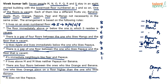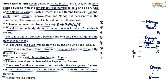We now have 7 consecutive floors arranged. The 8th floor can be either above mango or below S. If it's above mango, then S would fall on the 1st floor — but S lives on an even-numbered floor, so that's impossible. Therefore, the 8th floor must be below S, meaning S is on floor 2. The floors are numbered 1 through 8, and the arrangement is complete.